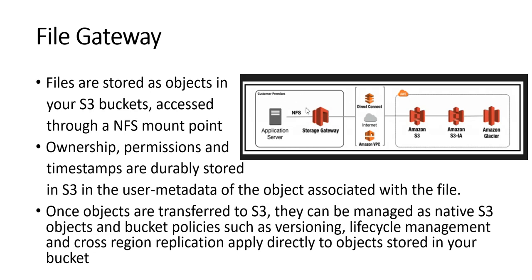In the file gateway diagram, the application server connects via NFS to your storage gateway — remember, storage gateway is a virtual machine running on-premises on your ESXi or Hyper-V servers. It then connects into AWS through the internet, direct connectivity, or Amazon VPC. Direct connectivity is basically a dedicated connection. With lifecycle management configured, data will first be stored in S3, then move to S3 Infrequent Access, and then to Glacier, or you can choose to delete it.